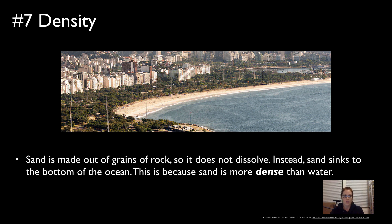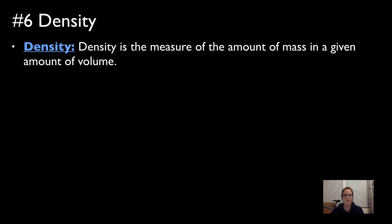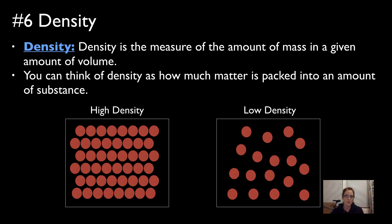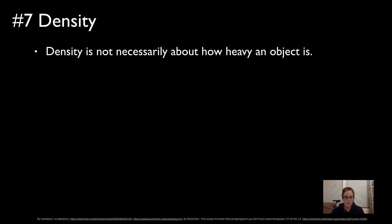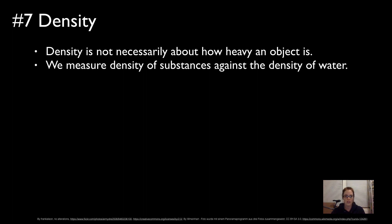Sand is made of tiny grains of rock, so it doesn't dissolve — it actually just sinks in water. It sinks because it's more dense than water. Density is the measure of the amount of mass in a given amount of volume — think of it as how much matter is packed into a substance. In the box on the left with many red dots packed in, that box has high density relative to the box on the right with fewer red dots, which has lower density. Density is not necessarily about how heavy an object is — it's about how much matter is packed into a substance.